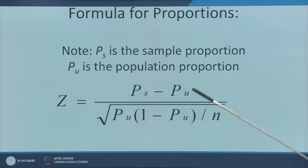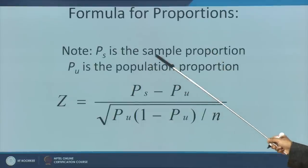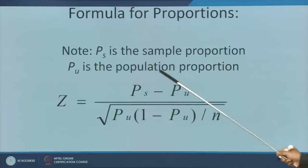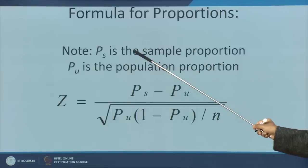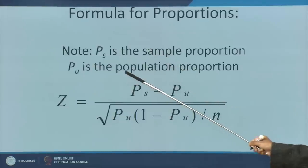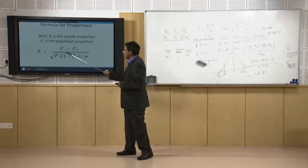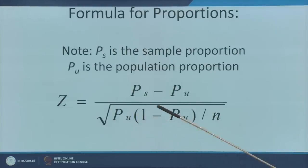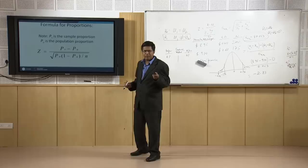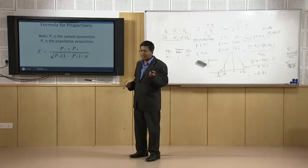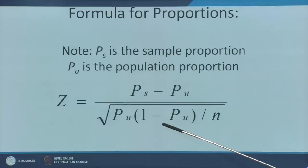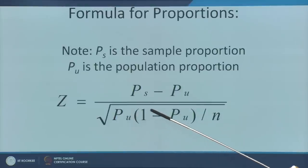The formula for proportions is: Z = (P_s – P_u) / root over of (P_u × Q / N), where P_s is the sample proportion, P_u is the population proportion, and Q is the probability of failure. Consider this problem: In a provincial election, 55% of voters rejected lotteries. A random sample of 150 people showed that 49% rejected the lotteries. Is the difference significant?